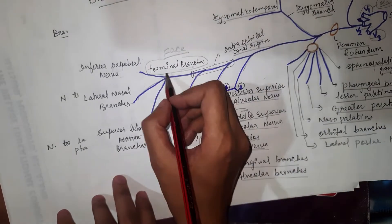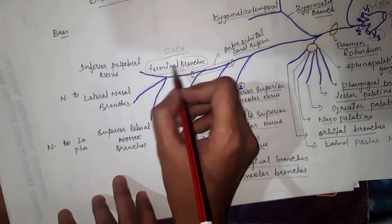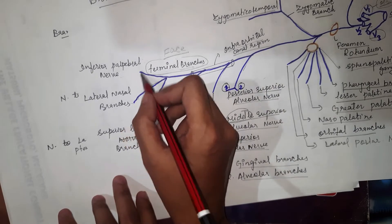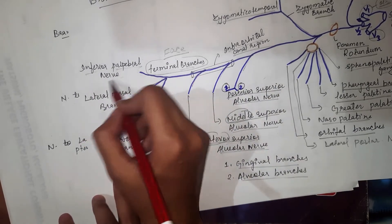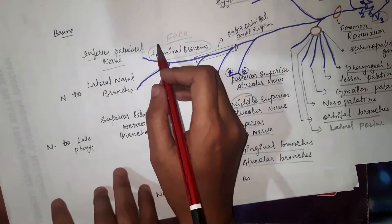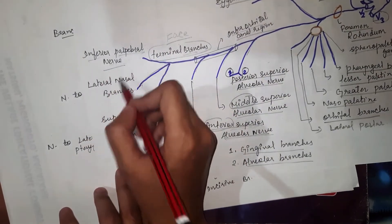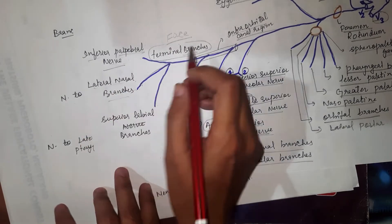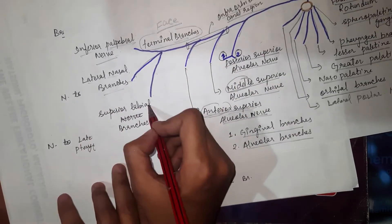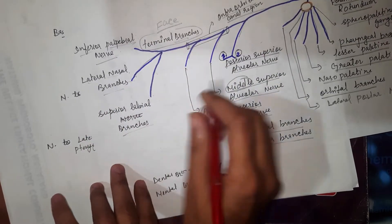The terminal branch has three branches: the inferior palpebral nerve, the lateral nasal branch, and the superior labial branch.